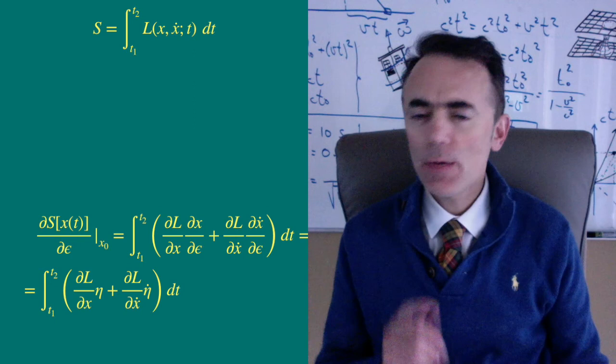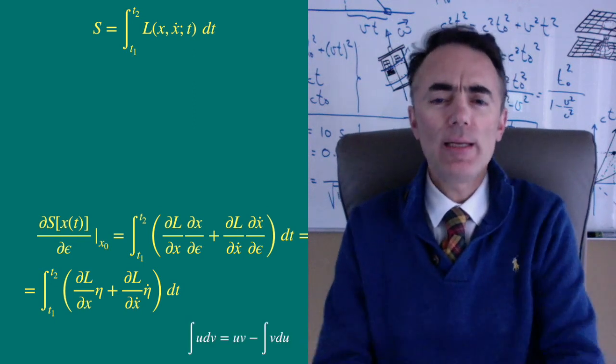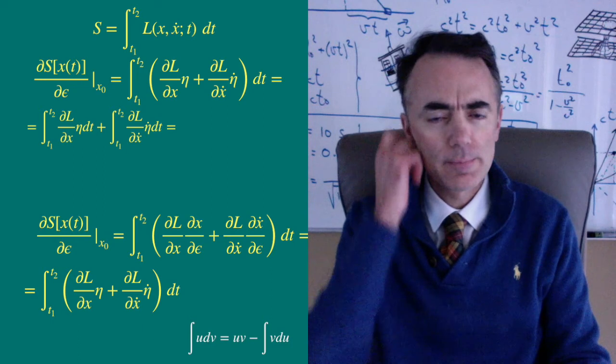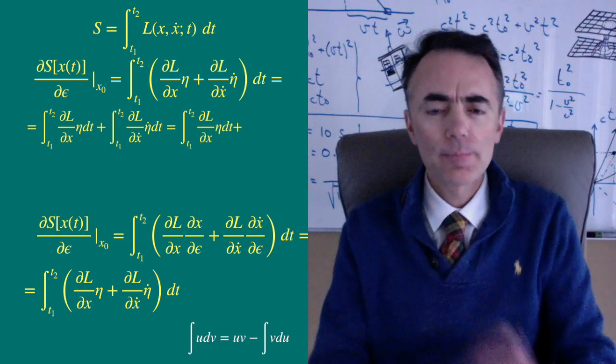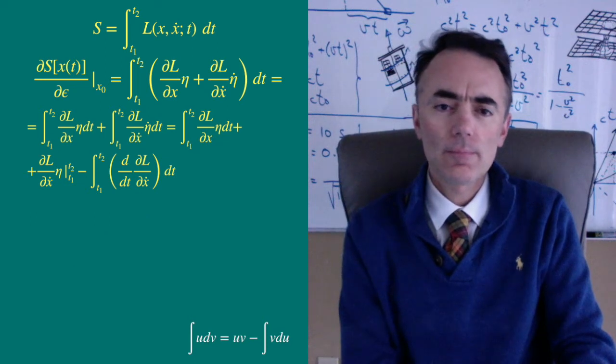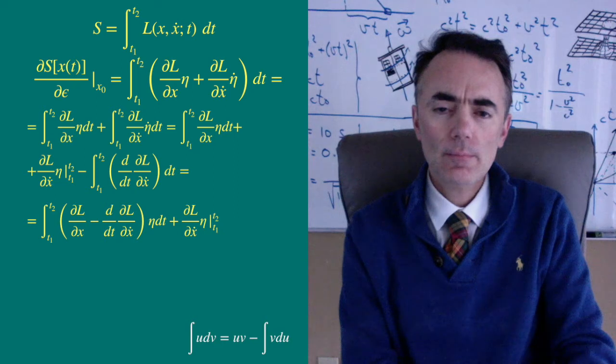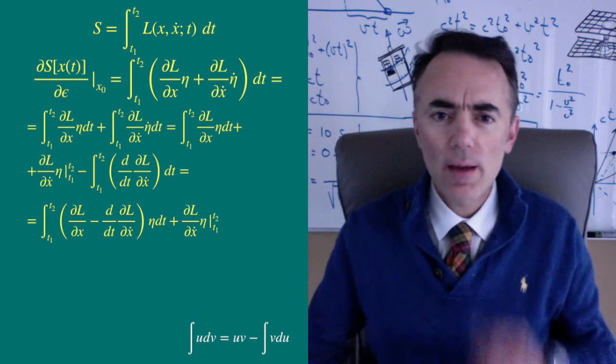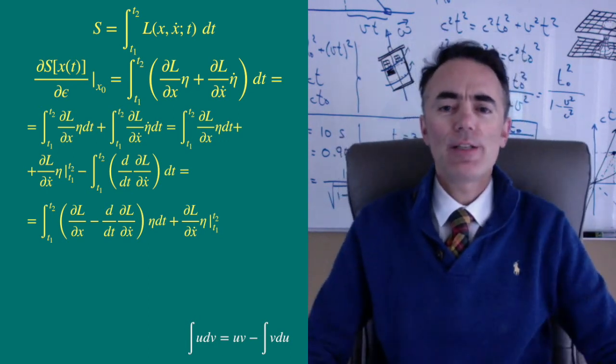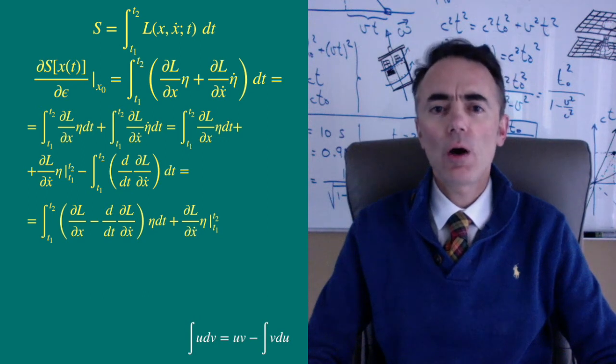Now, let me integrate by parts the second part of the integral. Because eta at the boundaries is 0, this last term vanishes and we get this other integral.